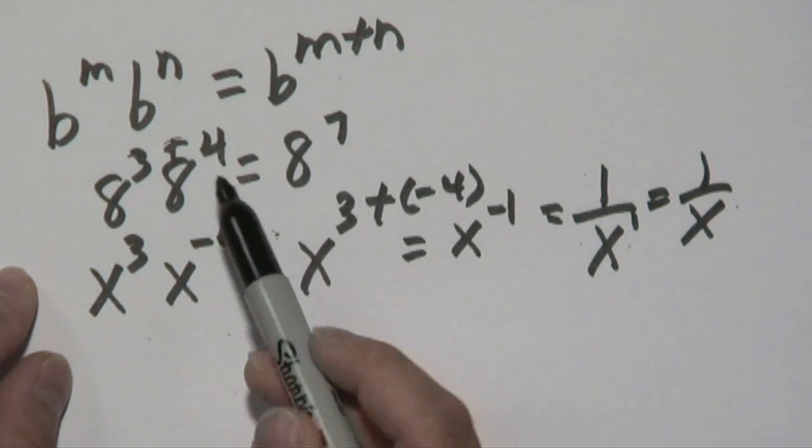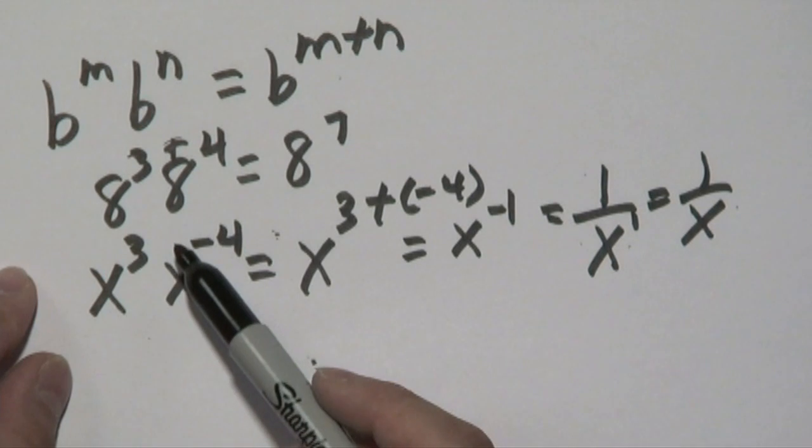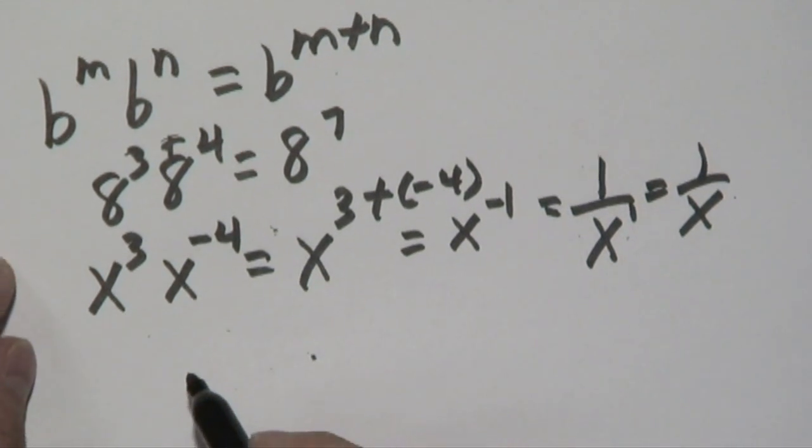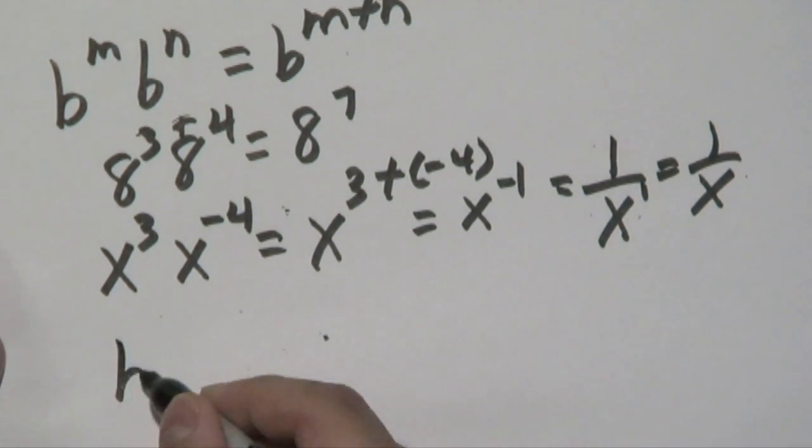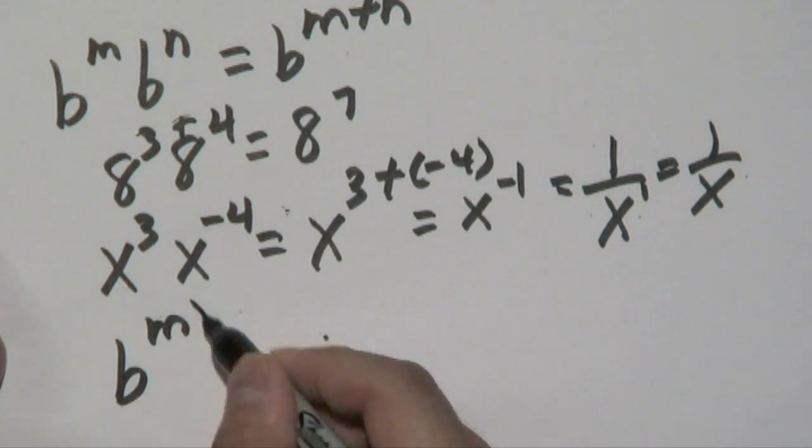Now, that's one way where exponents for multiplication can be addressed. The other rule that you want to be aware of would be a true multiplication of exponents.